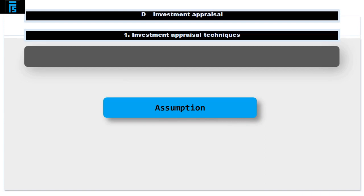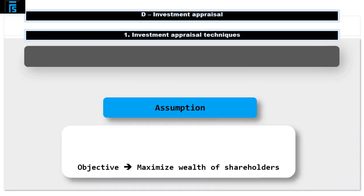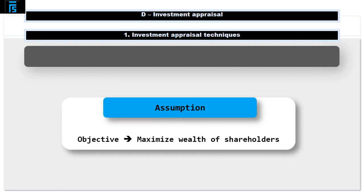Let's start off by making a key assumption. We're going to assume that we're trying to maximise the wealth of the shareholders. There are many reasons why businesses may invest — to secure growth, to achieve a non-financial goal or social purpose. But we're going to assume the deciding factor behind whether we go ahead or not is: will it create wealth for the shareholders? If it will, let's go ahead. If it doesn't, let's not.